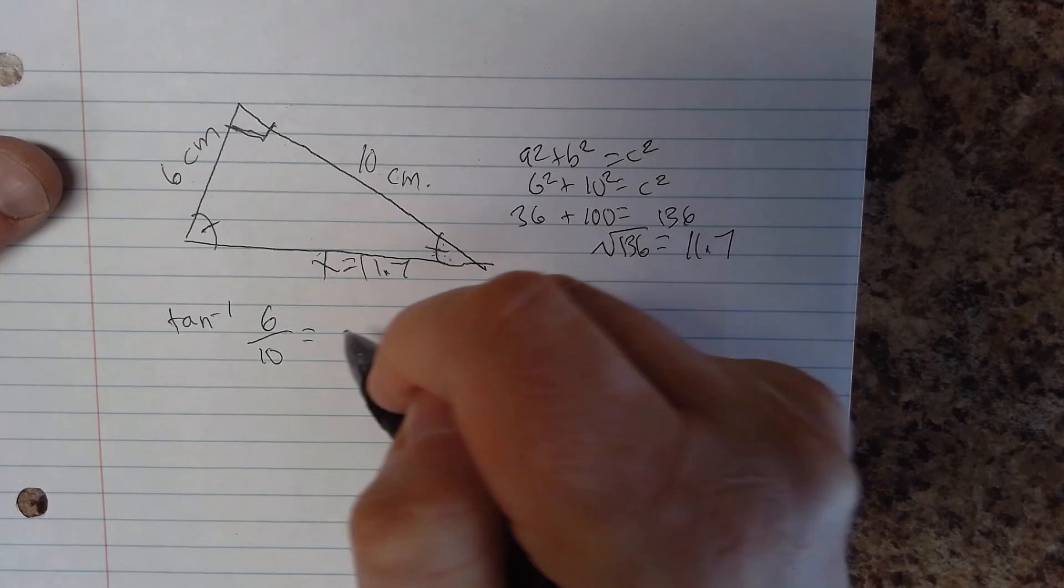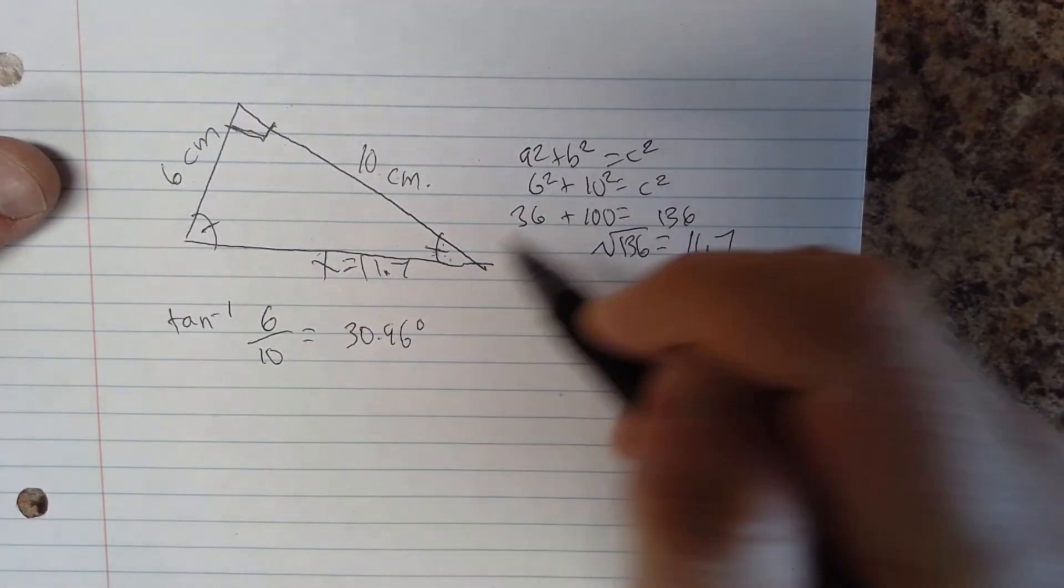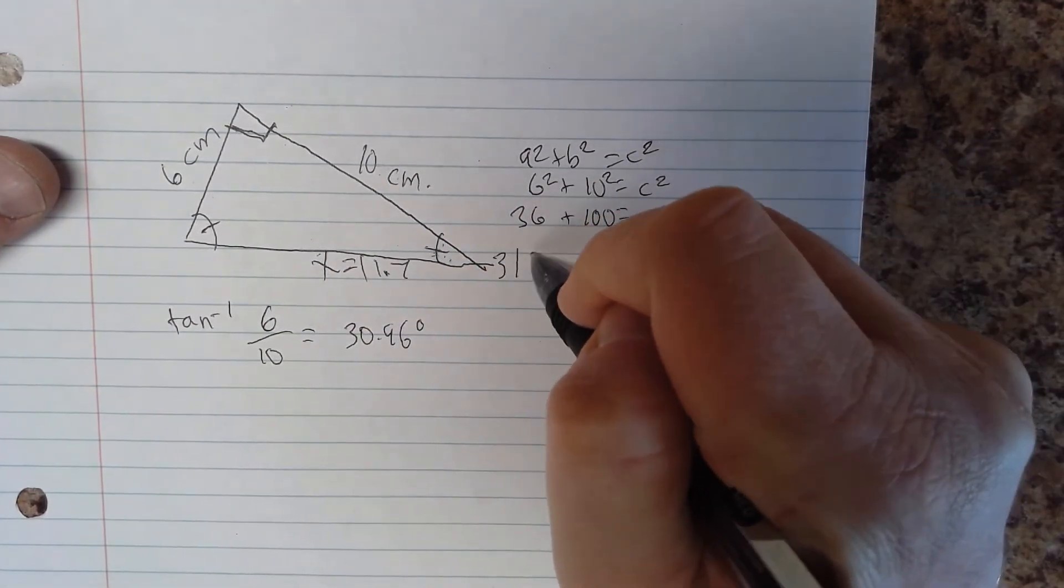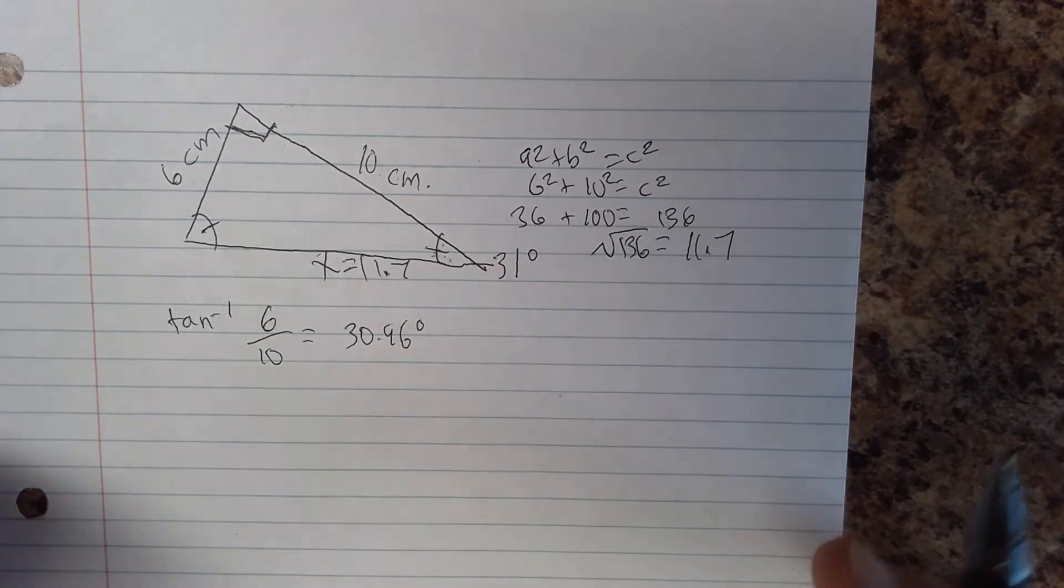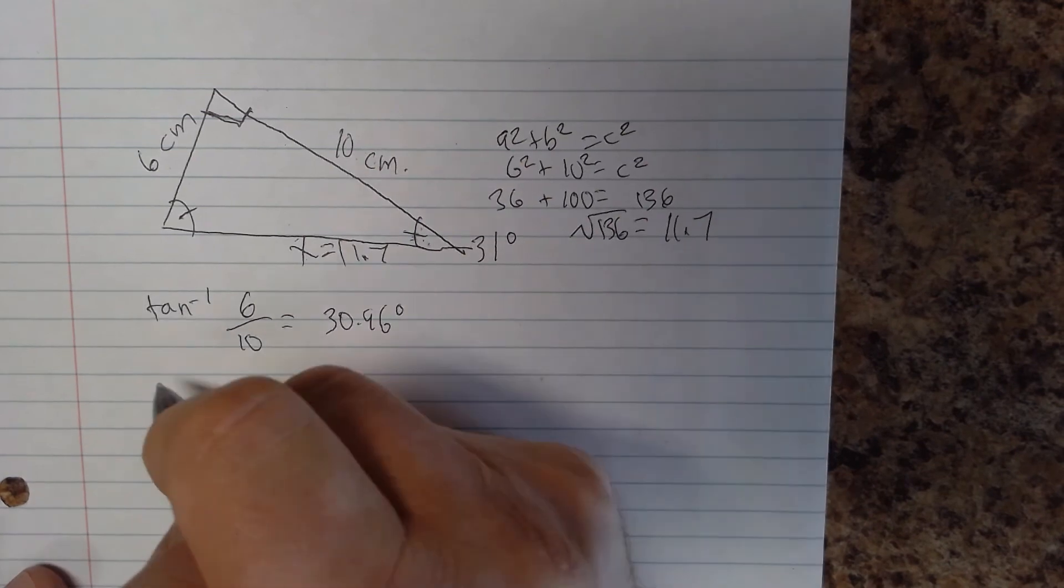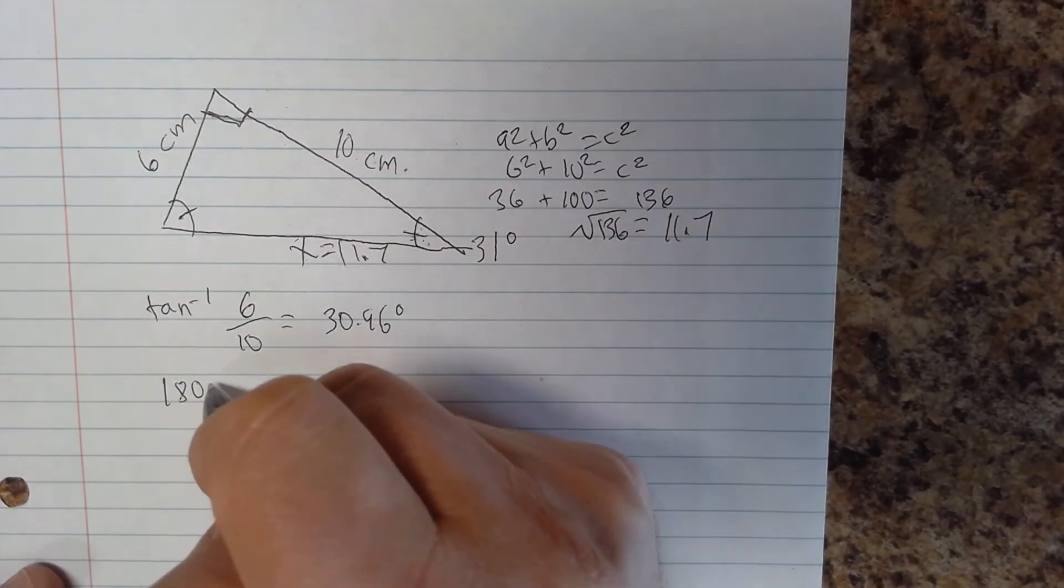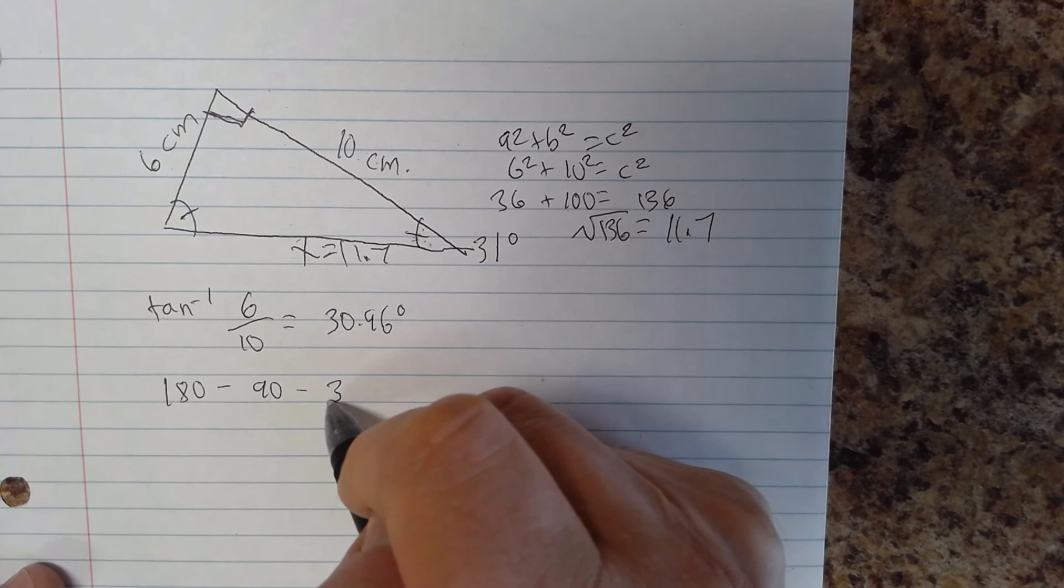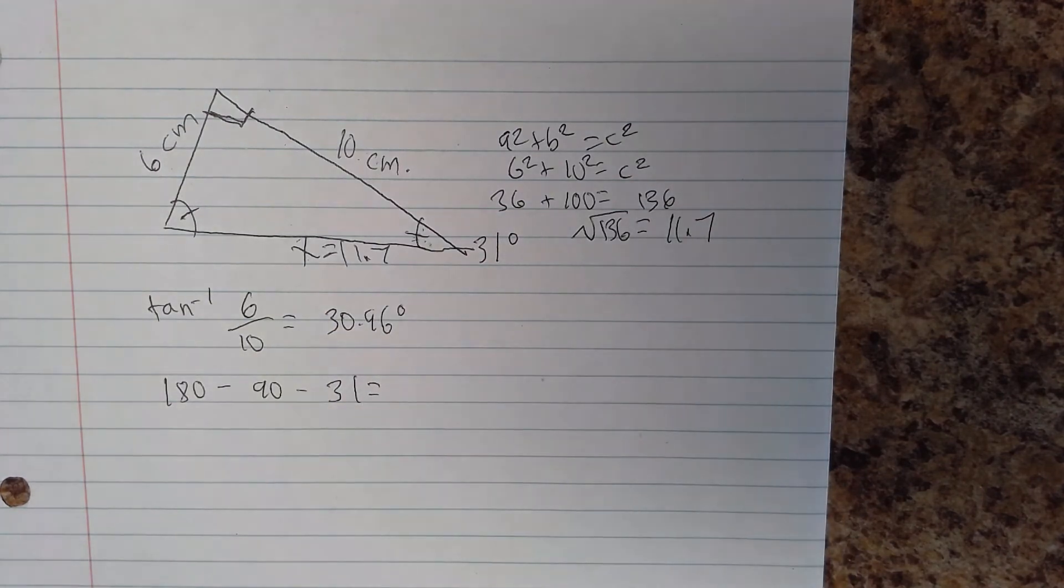Tangent inverse 6 over 10, 30.96 or rounded to 31 degrees because it's close enough. Now to solve for our third angle we can just use a method that's very familiar to us, 180 minus 90 minus 31, right?